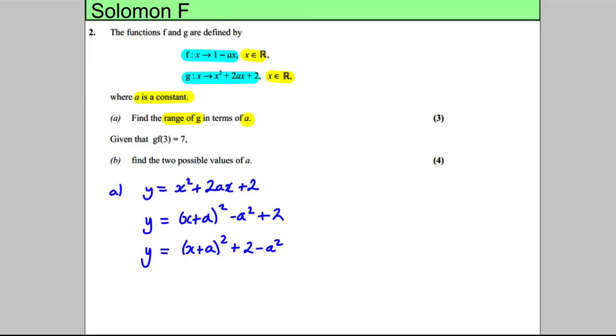Now this number part here and this number part here tells us the vertex of the graph. The vertex of the graph is going to be at negative a and 2 subtract a squared.